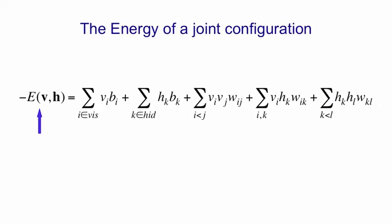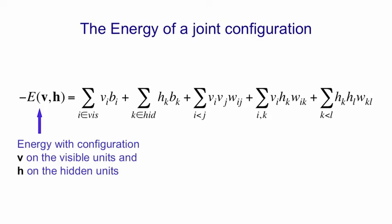The energy of a joint configuration of the visible and hidden units has five terms in it. So I've put the negative energy to avoid having to put lots of minus signs. And so the negative energy of the joint configuration Vh, that's with vector V on the visible units and H on the hidden units, has bias terms where Vi is the binary state of the ith unit in vector V. And Bk is the bias of the kth unit, in this case a hidden unit. So that's the first two terms.